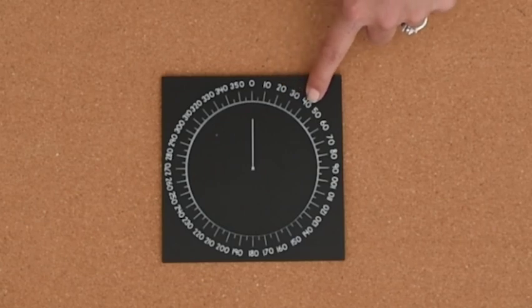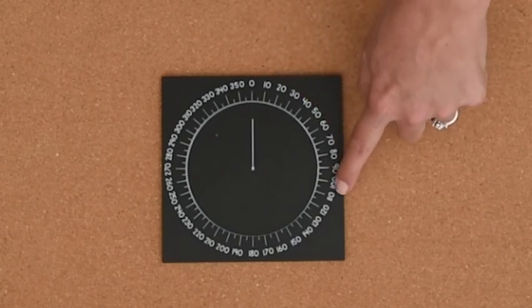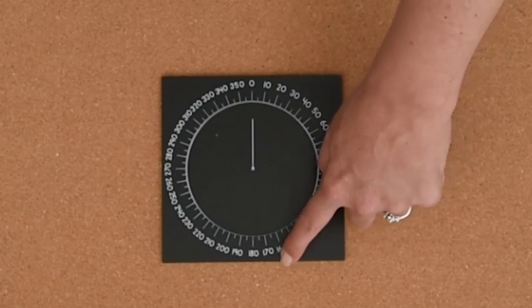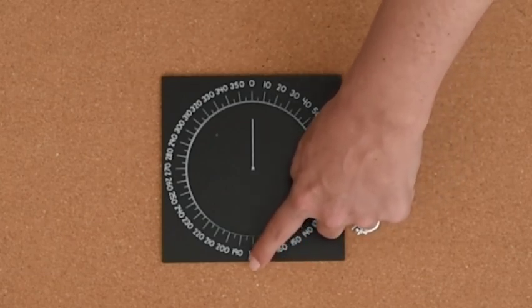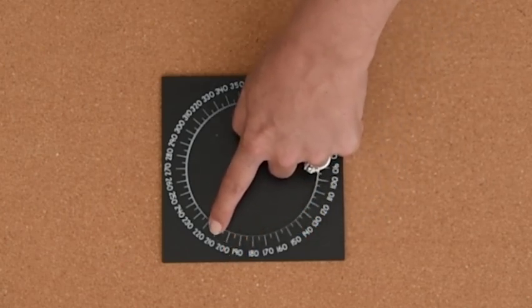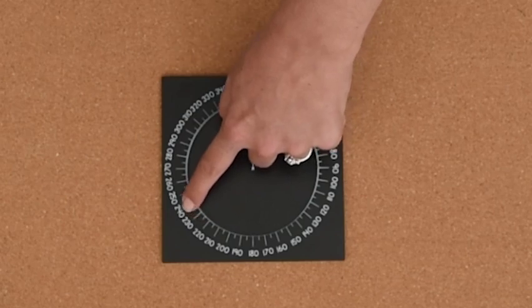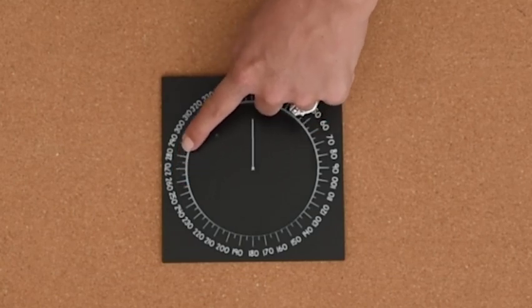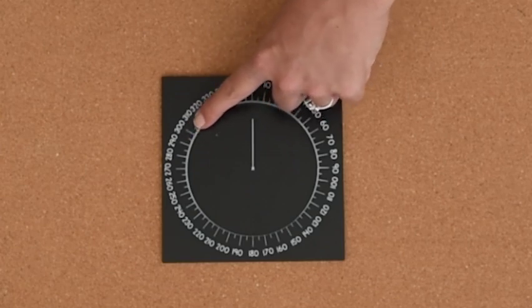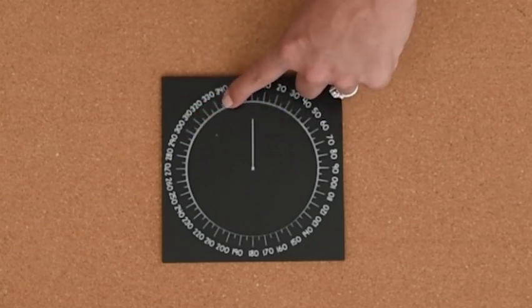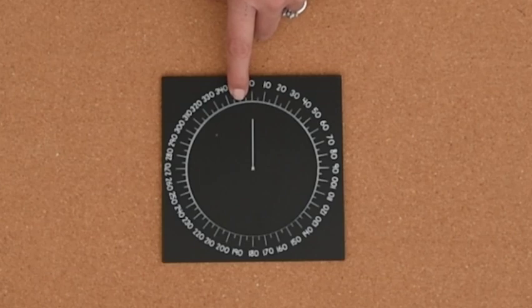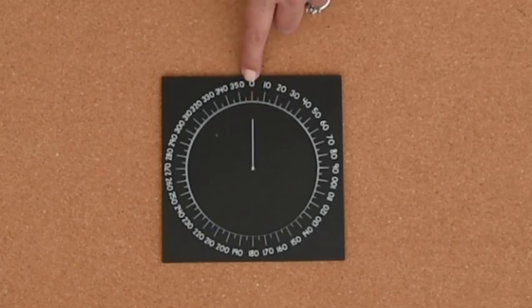10, 20, 30, 40, 50, 60, 70, 80, 90, 100, 110, 120, 130, 140, 150, 160, 170, 180, 190, 200, 210, 220, 230, 240, 250, 260, 270, 280, 290, 300, 310, 320, 330, 340, 350. And if we count these last little tiny lines here, 1, 2, 3, 4, 5, 6, 7, 8, 9, 10, we'll get to 360.